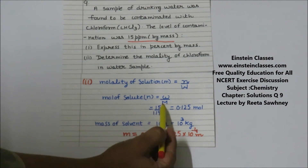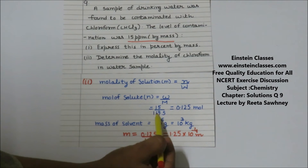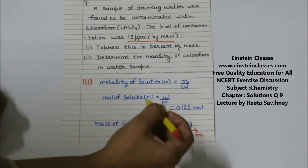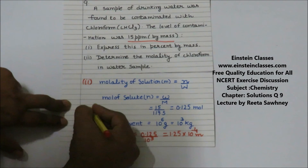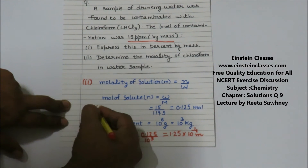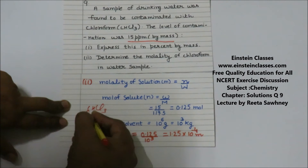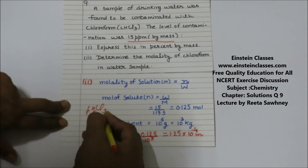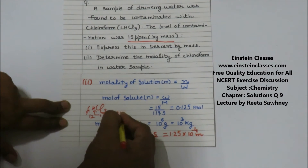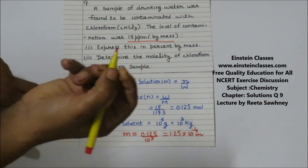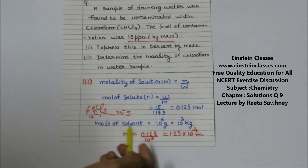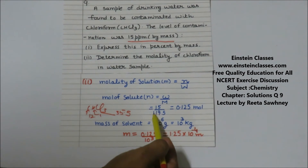The molar mass of chloroform CHCl3 comes out to be 119.5 g/mol. Carbon has atomic mass 12, hydrogen has atomic mass 1, and chlorine has atomic mass 35.5. Solving: 12 + 1 + (3 × 35.5) = 119.5.